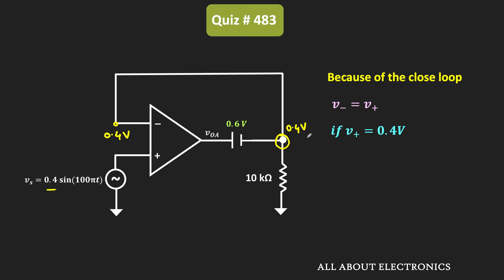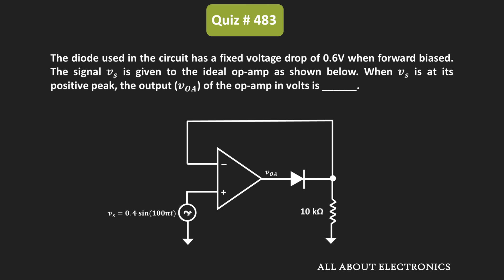And now, using simple circuit analysis, we can find this voltage Voa. This voltage Voa is equal to 0.6V plus 0.4V, which is equal to 1V. So in this way, we can say that whenever this Vs is equal to 0.4V, then the voltage at this node or this Voa is equal to 1V. Therefore, for the given question, the answer is equal to 1V.